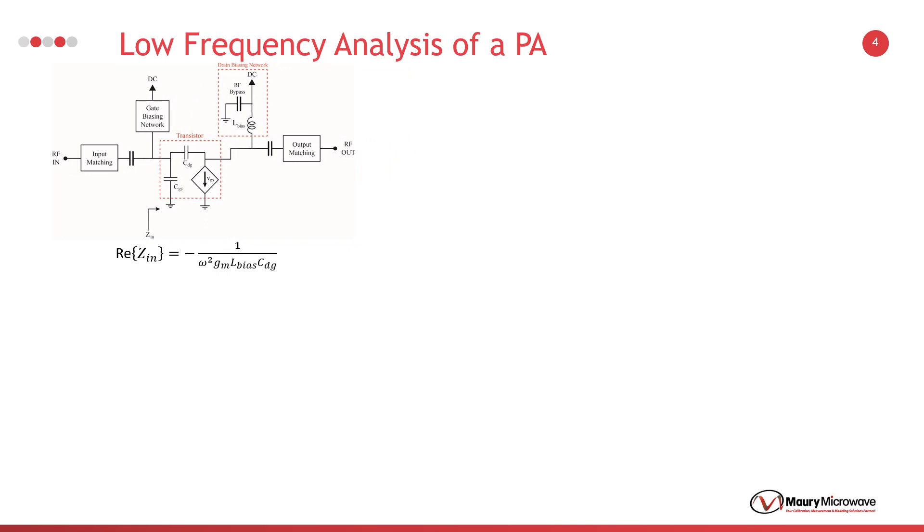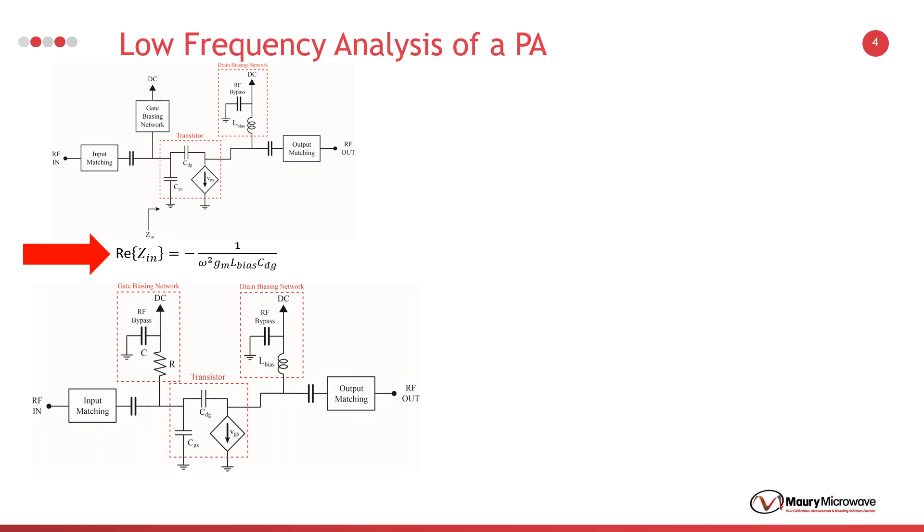In the previous slide, we observed that the real part of the input impedance is negative in the low frequency region. If we extend our analysis by including a regular biasing network having a serial resistor and an ideal RF bypass capacitor, this additional network changes the real part of the input impedance dramatically. Now, it is almost equal to the value of the resistor. This equation is applicable for a resistor value that is not very small or very large.